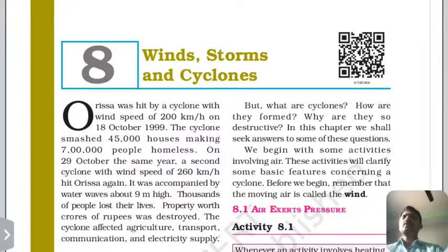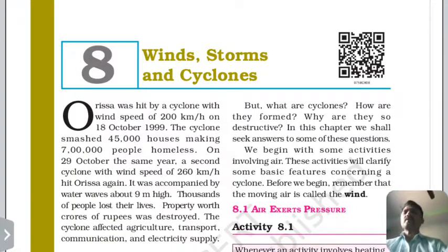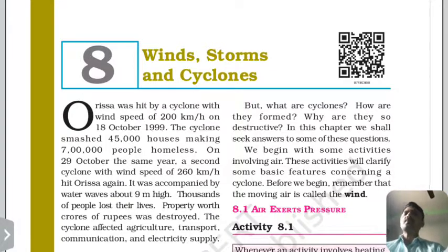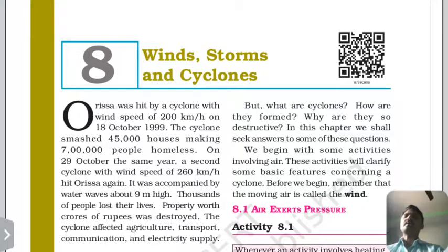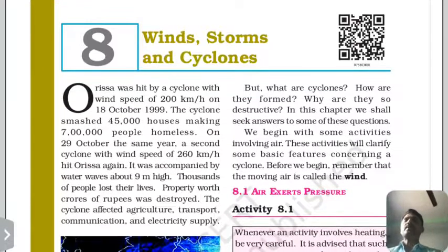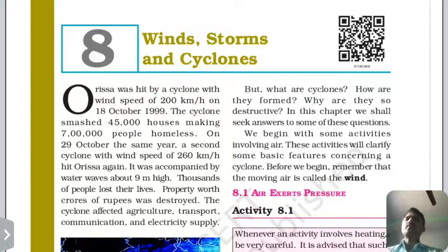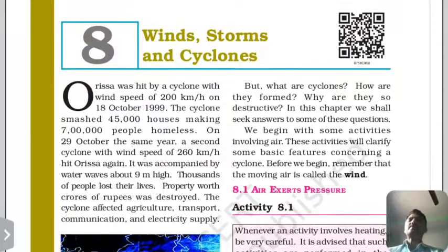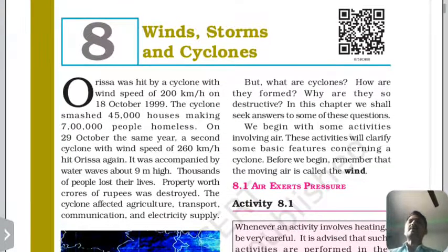In this chapter we will study wind storms and cyclones. In Orissa, a cyclone hit with a wind speed of 200 km/h on 18 October 1999, leaving 45,000 houses damaged and 7 billion people homeless. On 29 October, another cyclone hit at 260 km/h, showing quite a significant difference in intensity.